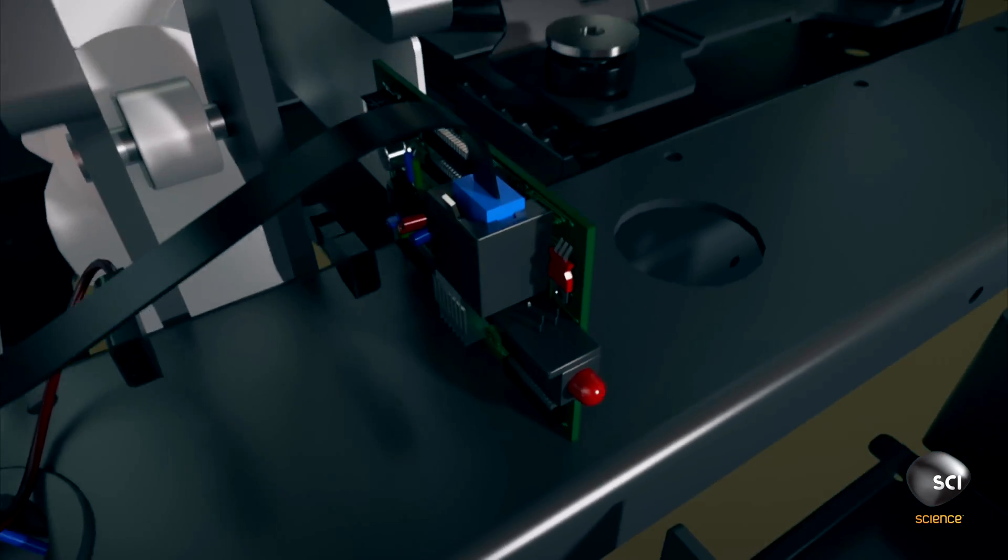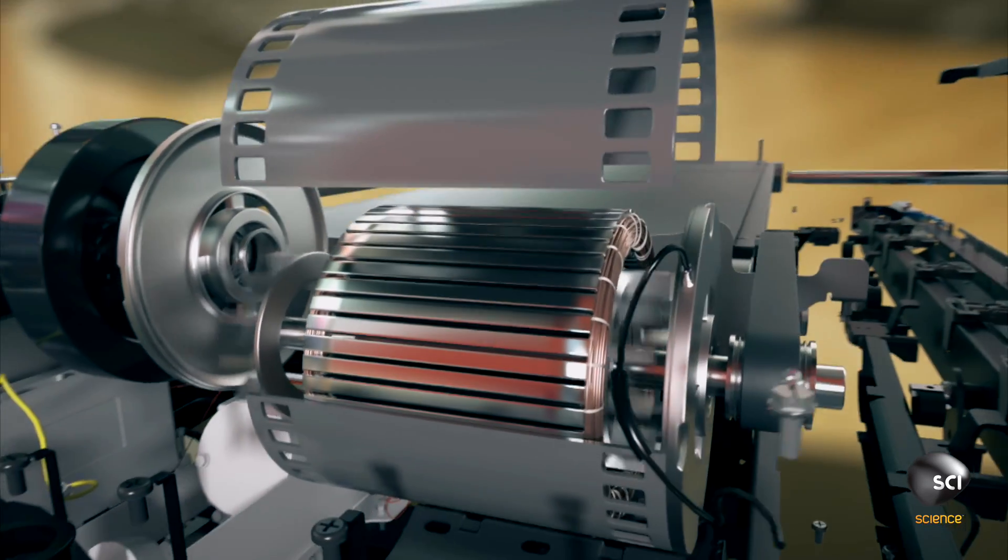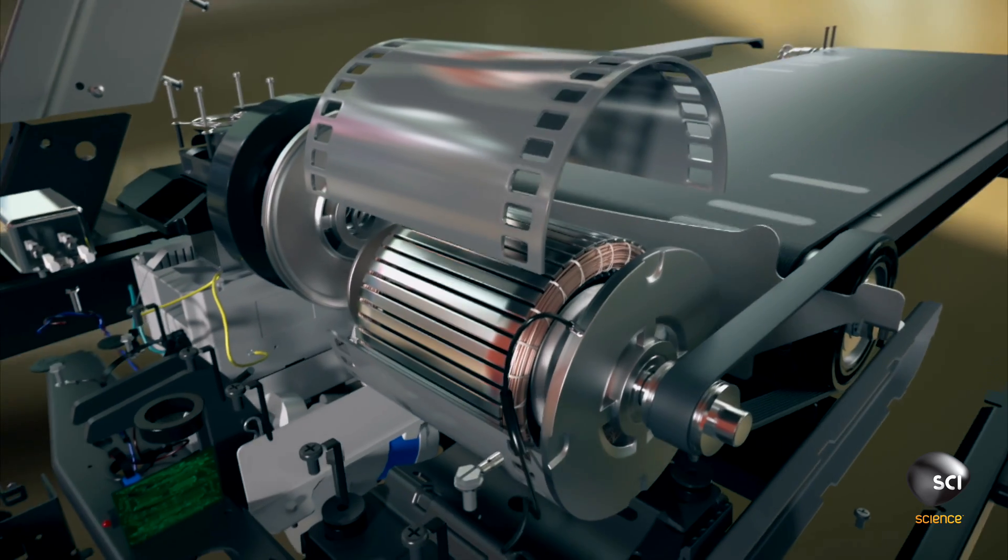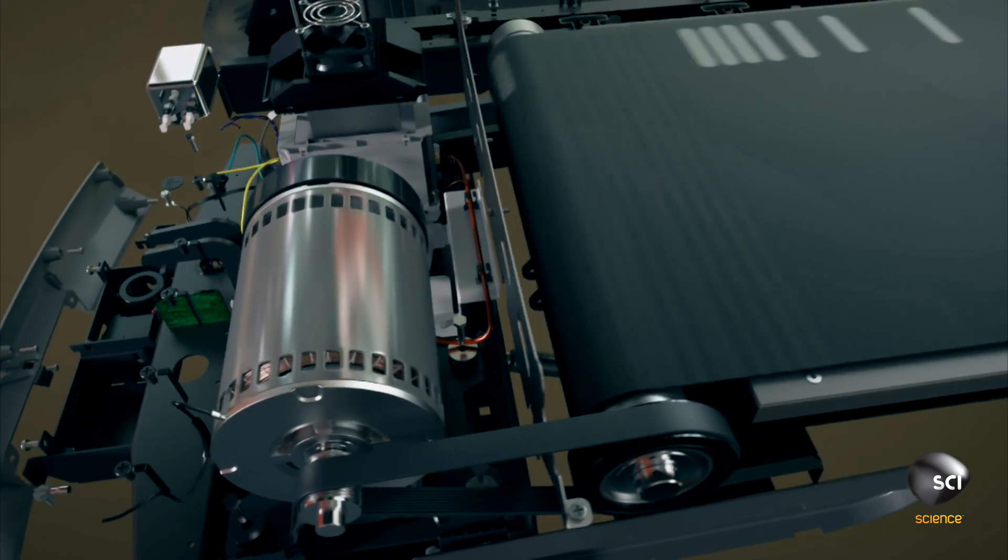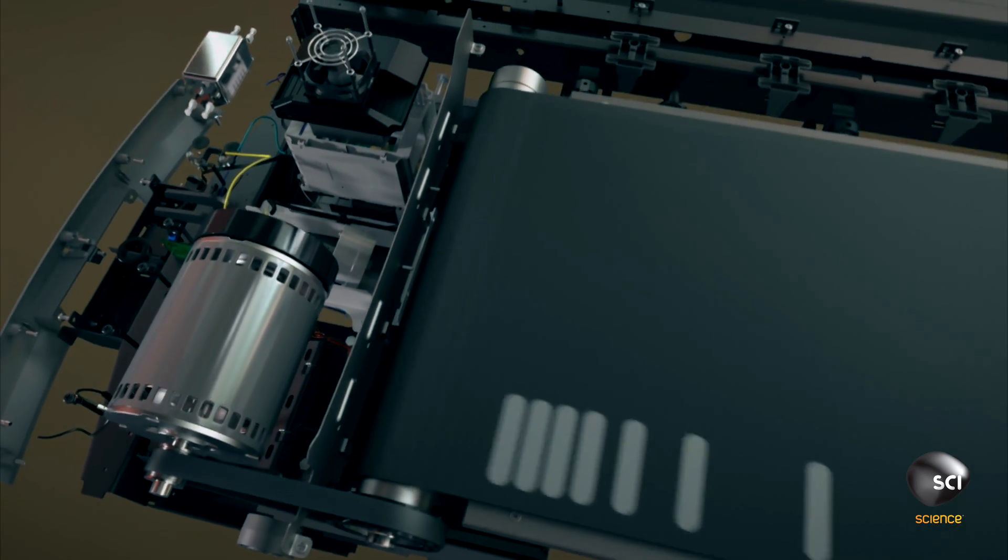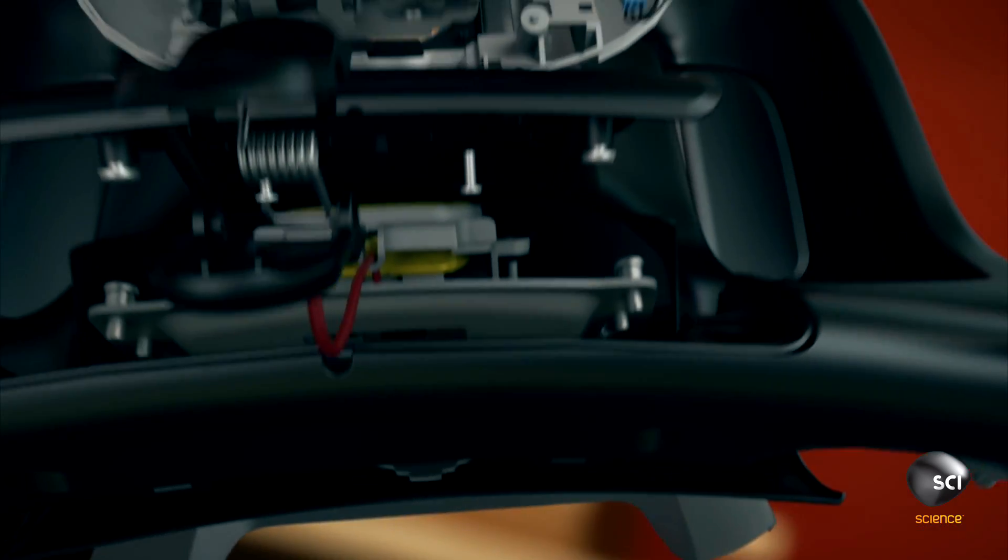In a microsecond, an electronic controller detects the change of pace. It powers the motor to spin faster. This returns the belt to the selected speed to create a smooth running surface that matches the runner's stride.